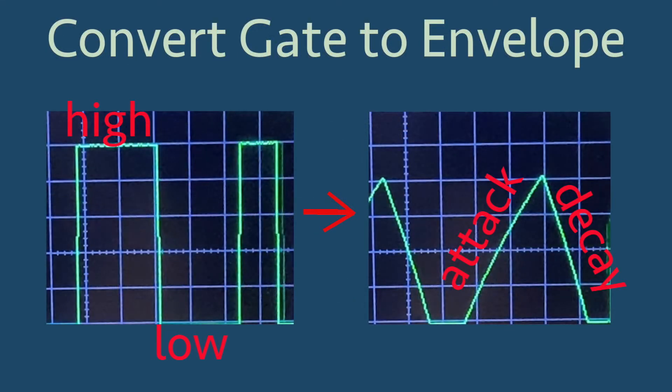The slew limiter can take this gate signal as an input and slow down the change in voltage from low to high and vice versa. This output is simply an attack-decay envelope, which could be applied to a filter, amplifier, or to the pitch of an oscillator. It takes the extreme discrete change between off and on, and changes it to a slower rise and fall through all of the values in between.